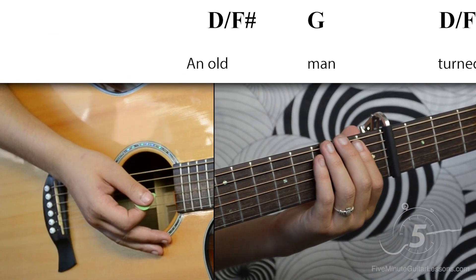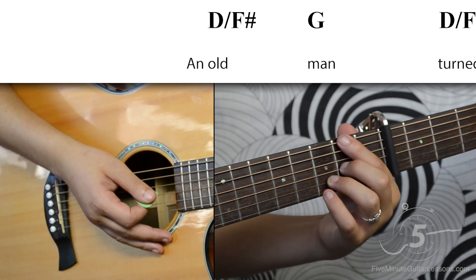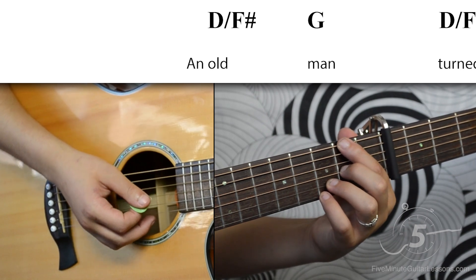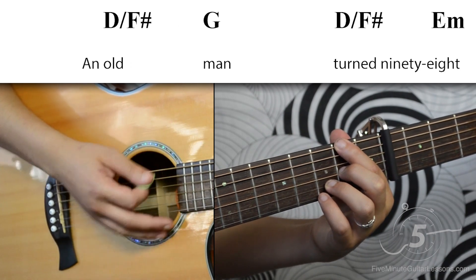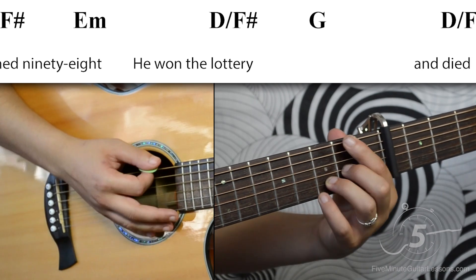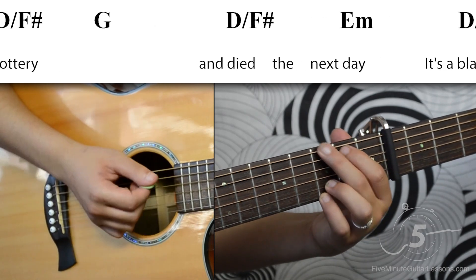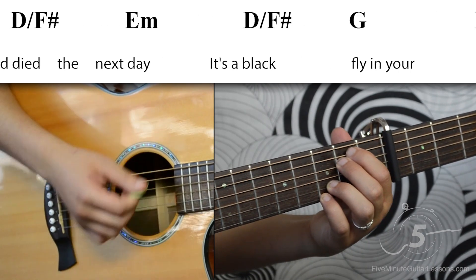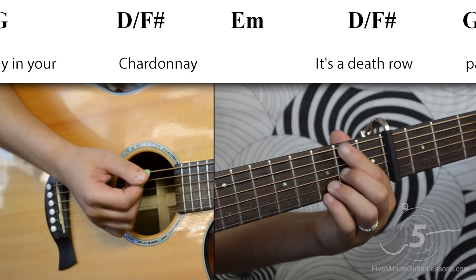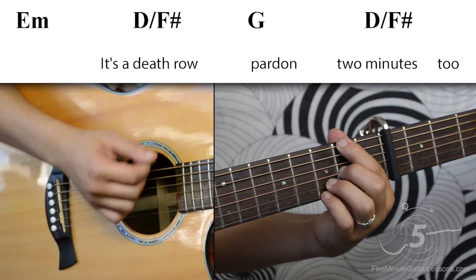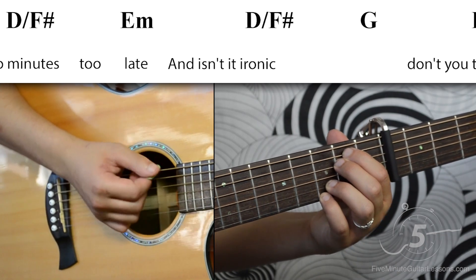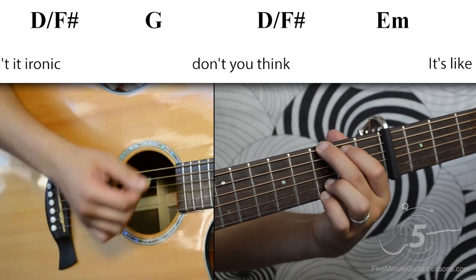Now let's try the chords from the verse using down strokes. We'll do two down strokes per chord. One, two, three, four. One, two, three, four.